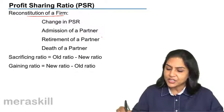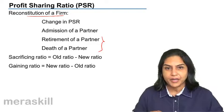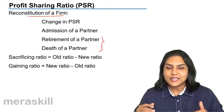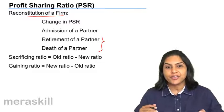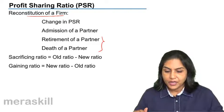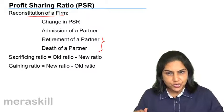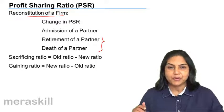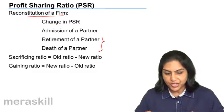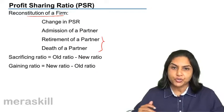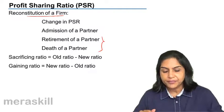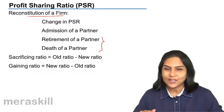What happens in case of retirement and death of a partner? A partner leaves, so the existing partners' share generally tends to increase. A firm is reconstituted when the profit sharing ratio is changed — on admission of a new partner, in case of retirement of a partner, or in case of the death of a partner.